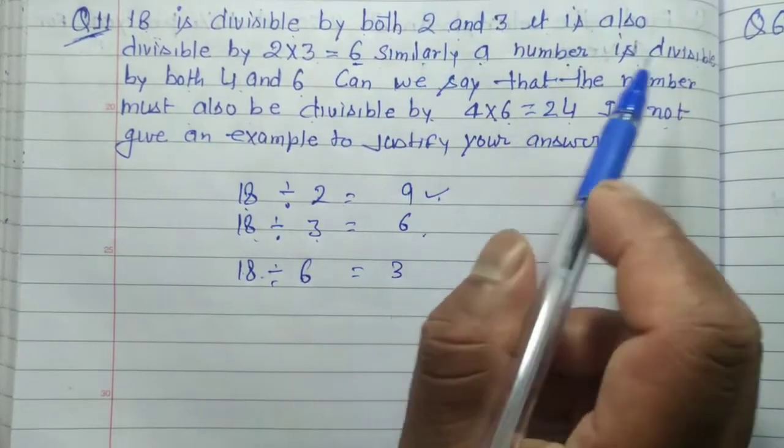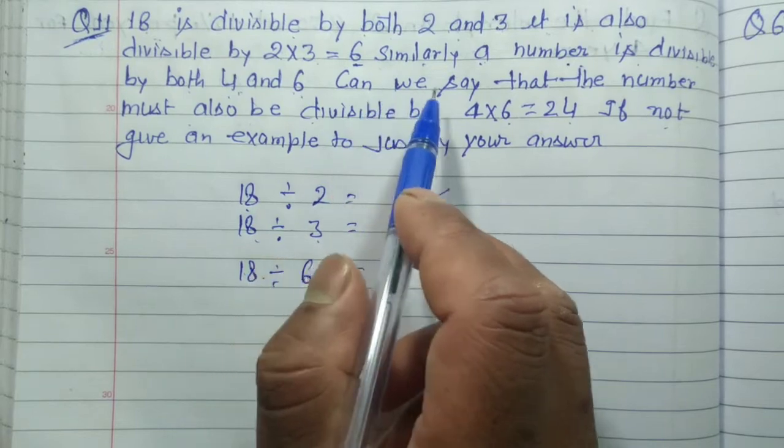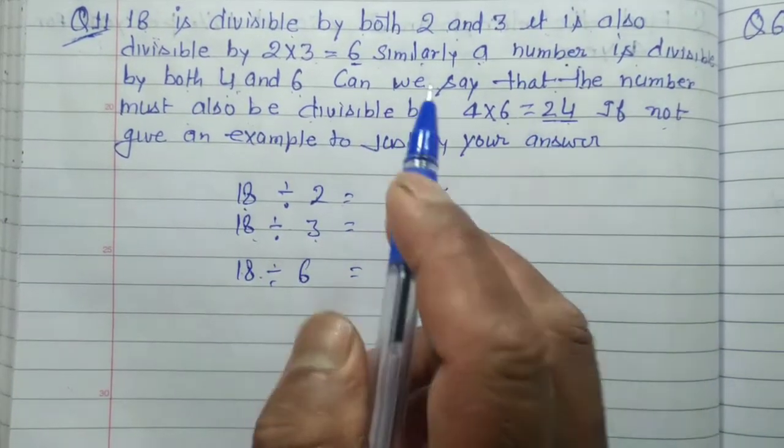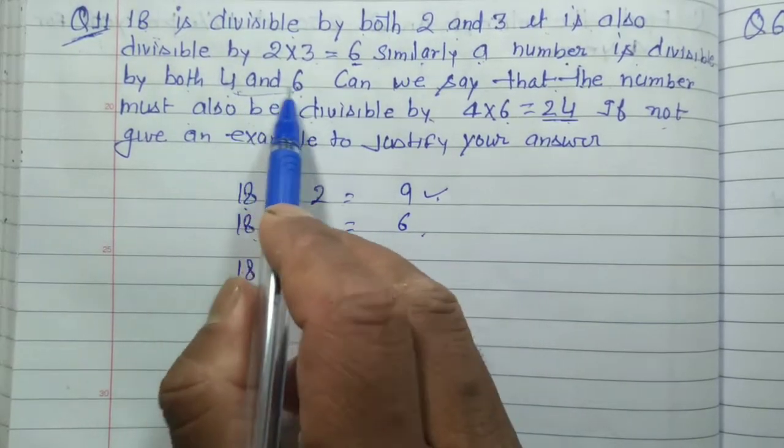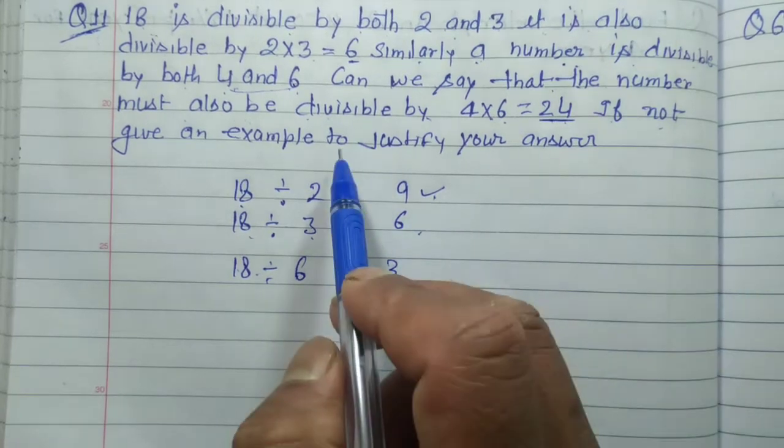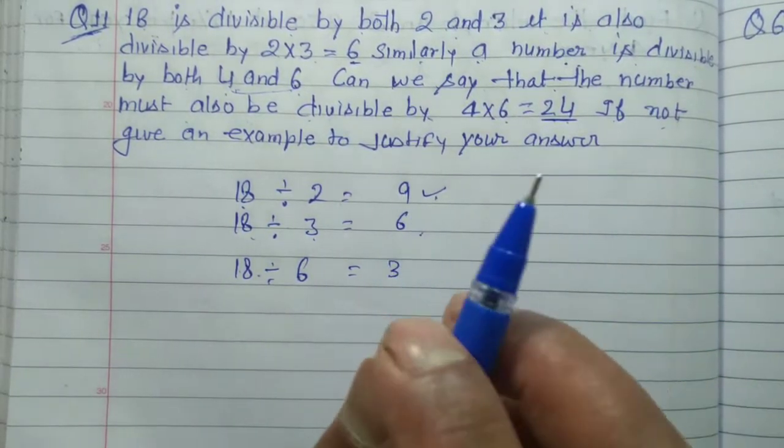Now, similarly, the number is divisible by both 4 and 6. Can we say that the number is also divisible by 24? We have to give an example. If not, we take an example.